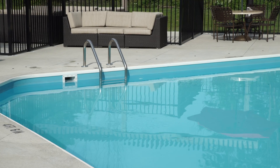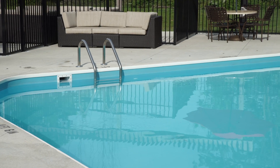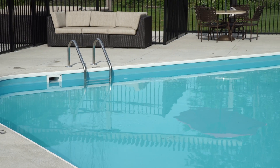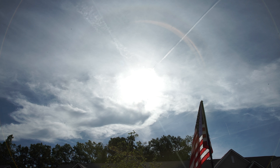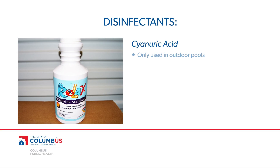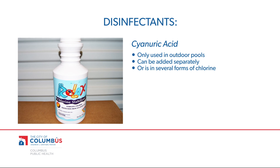A challenge with chlorine is that half of it in a pool can be destroyed by sunlight in less than an hour. Cyanuric acid reduces this loss. It should only be used in outdoor pools and can be added separately or in several forms of chlorine.